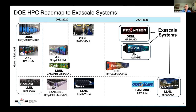These are the platforms and roadmap of systems we're focusing on. Perlmutter is being installed now — it's an NVIDIA-based system, not one of our target systems, but a nice staging platform. Summit is at Oak Ridge right now. The three exascale systems are Frontier, which is an AMD GPU-based system; Aurora, which is an Intel GPU-based system; and later El Capitan, which will be similar to Frontier. These are our targets — the systems we have to demonstrate our capabilities on as we approach the end of the Exascale project.